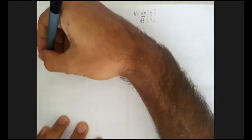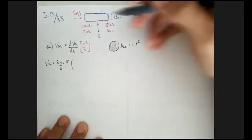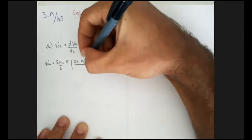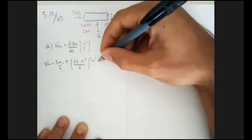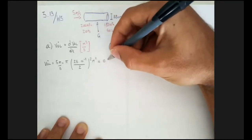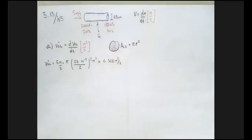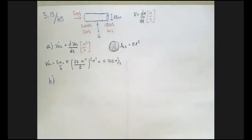The cross-sectional area is π r². So our volumetric flow rate is 5 meters per second times π times (28 × 10⁻² / 2)² meters squared, which gives us 0.308 meters cubed per second. No mysteries there — nothing new.